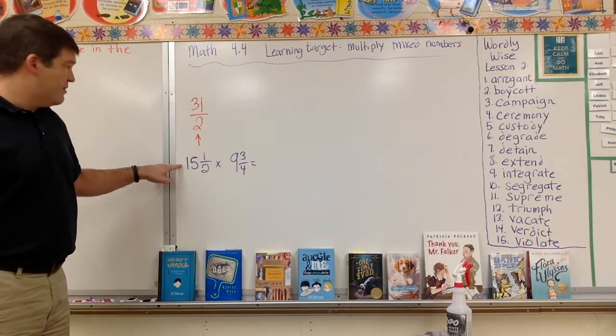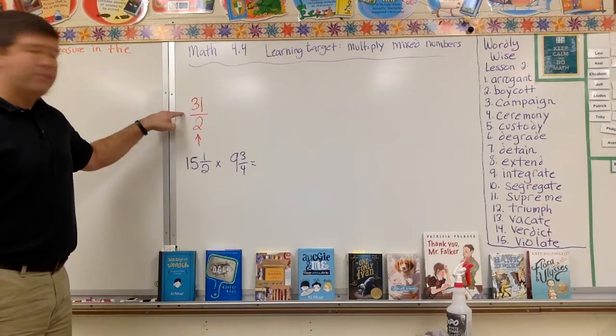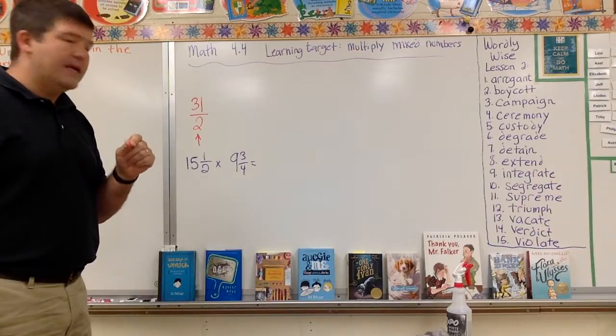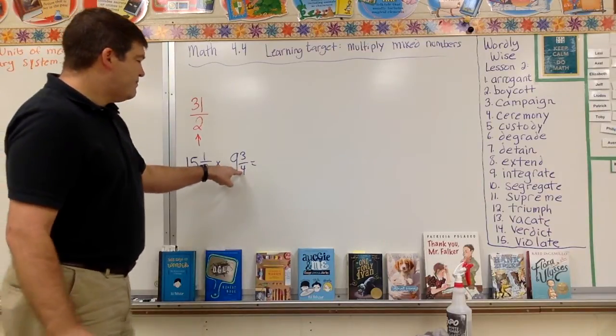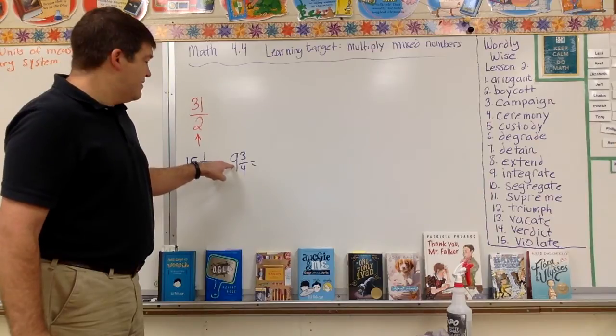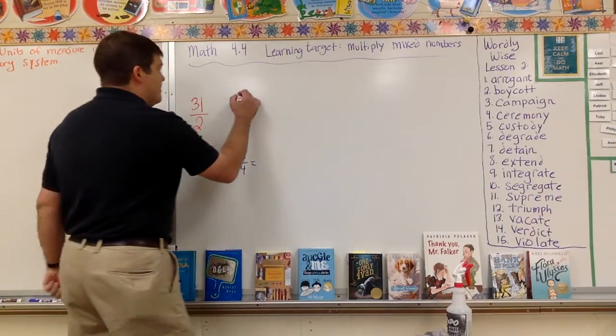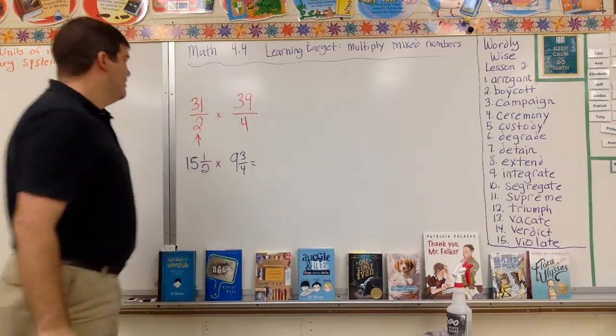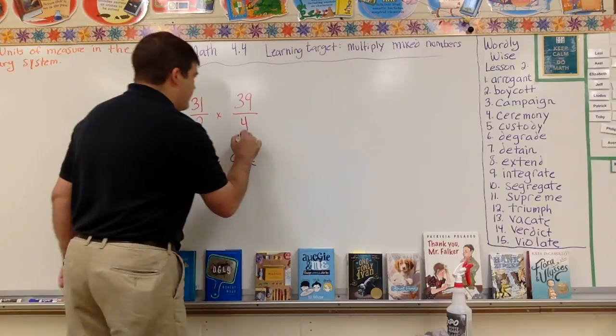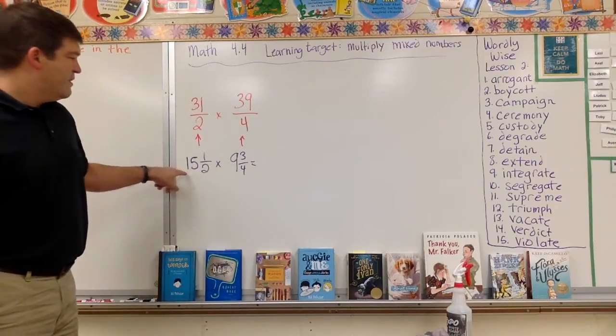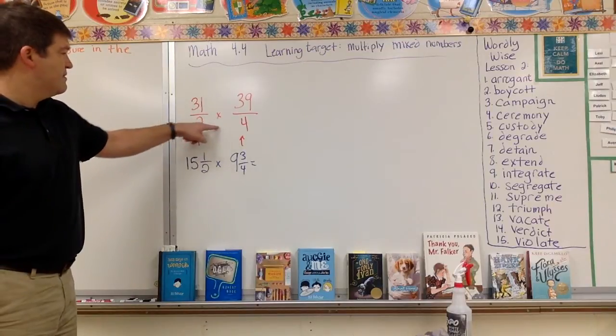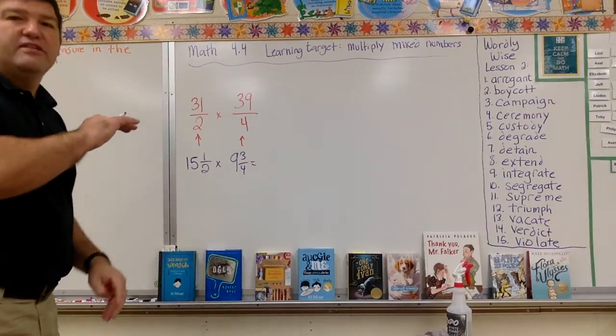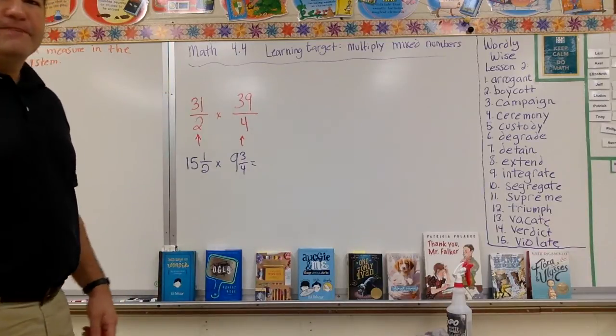This is the improper fraction form. So these are in two different forms, but the exact same amount. Let's do this one. Nine times four, thirty-six, thirty-seven, thirty-eight, thirty-nine. So I have thirty-nine, and then four. So this is the mixed form. This is the improper form. This improper form is easy to multiply across. So I'm going to do it.